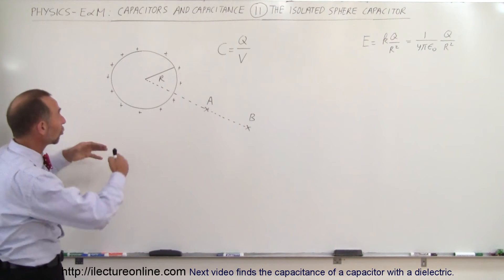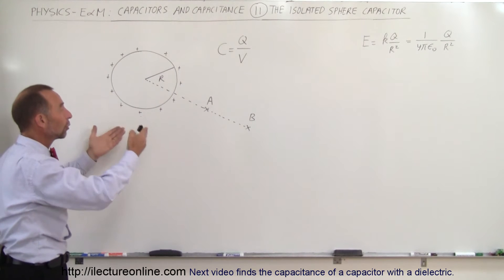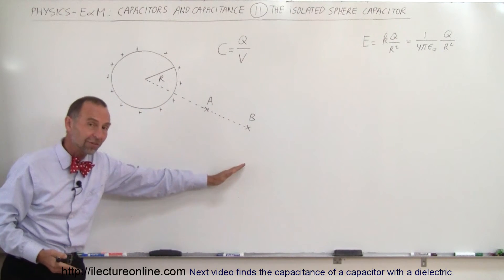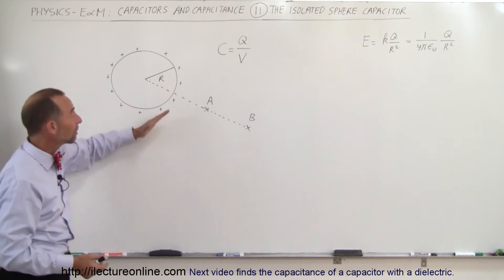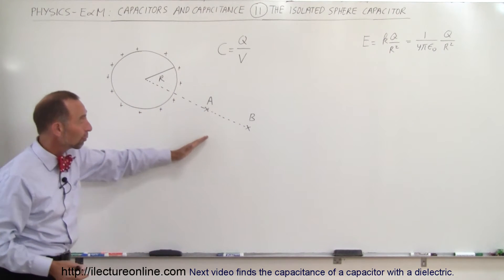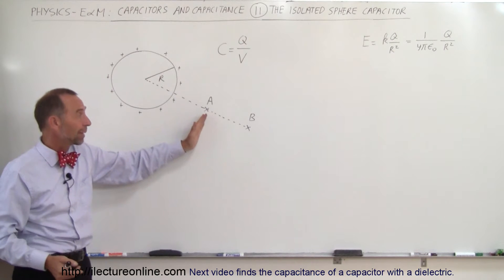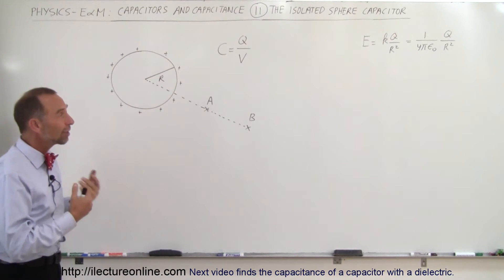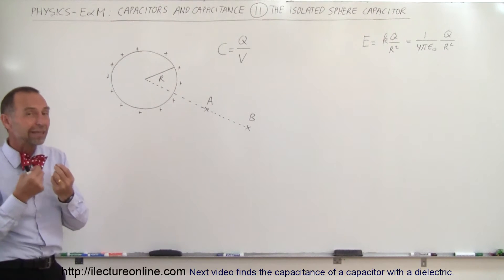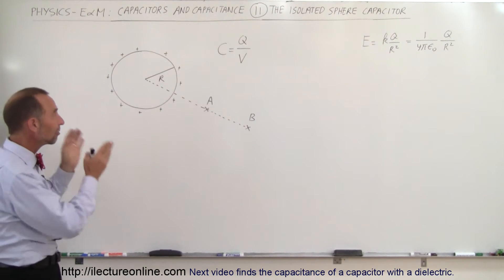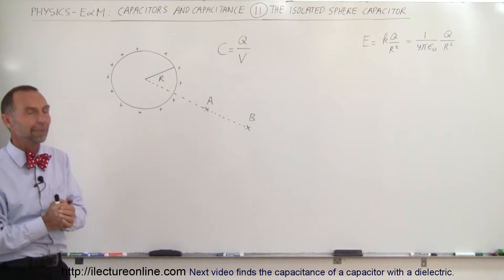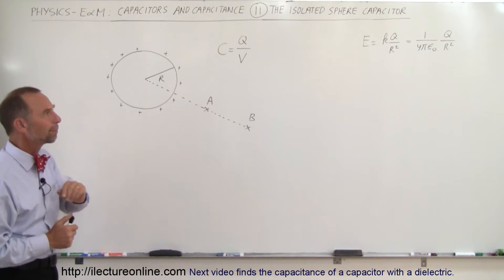We can store charge on a single sphere and therefore we'll have an electric field outside, which means there'll be a potential difference when we go from A to B or from B to A. So we can actually calculate the capacitance of an isolated sphere. Let's do that.